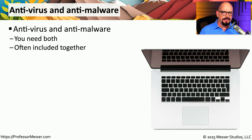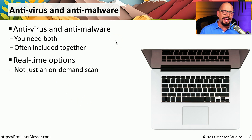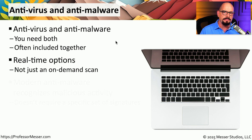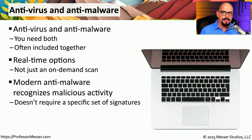If you're managing a relatively small network or a home network, you're probably just using antivirus and anti-malware software. These usually run as real-time options on your system, constantly watching everything that you're doing. If you happen to download something that is deemed to be malicious, it will be identified immediately by the real-time scanner. We are also starting to see enhancements to antivirus and anti-malware software suites where they can identify malicious actions outside the scope of a signature, stopping threats in their tracks.